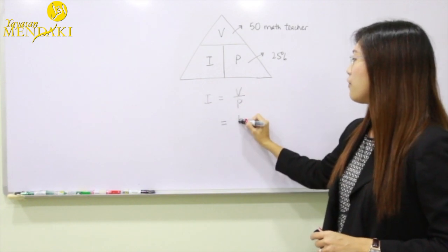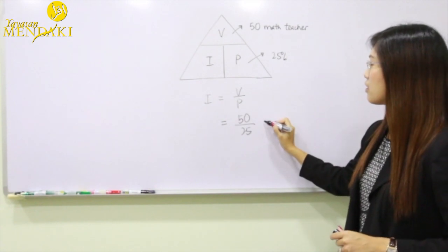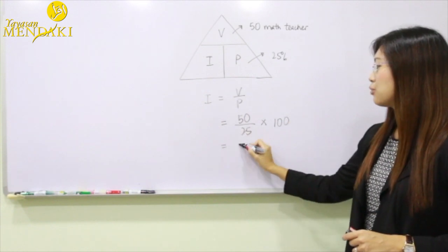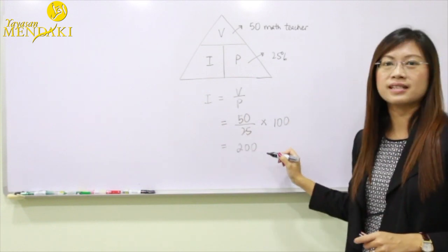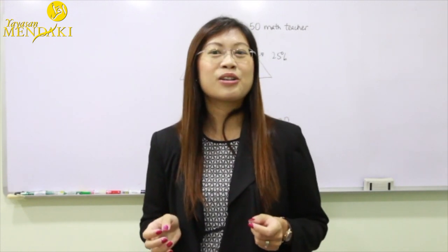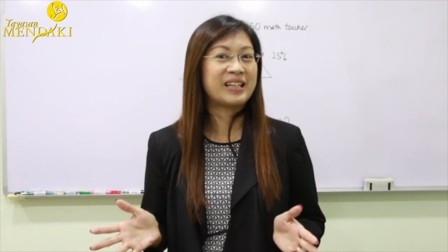So therefore we have 50 divided by 25 and you have to multiply by 100. So this gives you 200 teachers. This is how you should use the VIP method to solve percentage problems. I hope this helps and I'll see you in the next video.